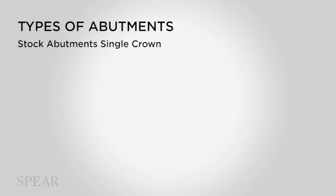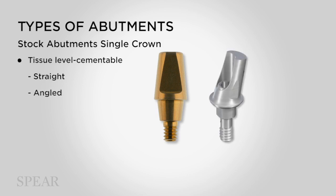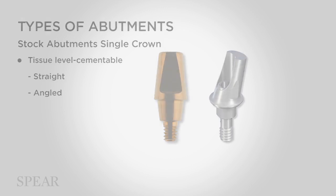Let's look at each of these categories. Cementable stock abutments for tissue-level implants come in three different kinds. There's a straight abutment that screws directly into the implant — great for posterior restorations where the implant is appropriately placed. There's an angled abutment that changes the direction of the abutment relative to implant placement, so if an implant is placed a little too far buccal or lingual, the angled abutment allows the restoration to be fabricated more appropriately.